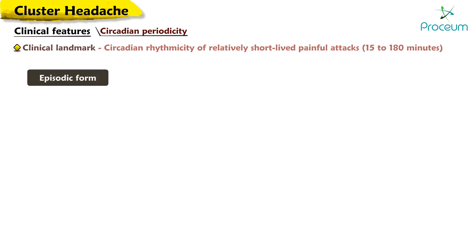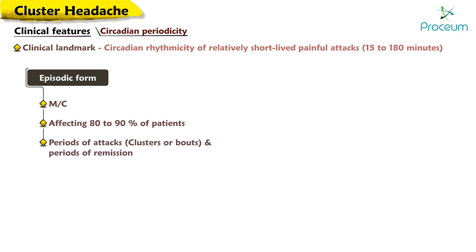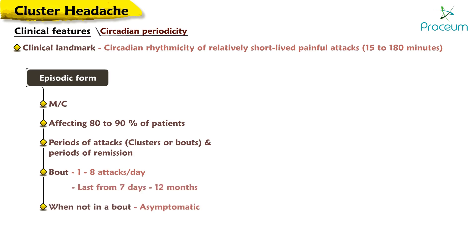The episodic form of cluster headache is the most common, affecting 80 to 90 percent of patients. It is characterized by periods of attacks (clusters or bouts) and periods of remission. Patients may experience one to eight attacks per day, and bouts may last from seven days to 12 months. When not in a bout, patients are usually asymptomatic.